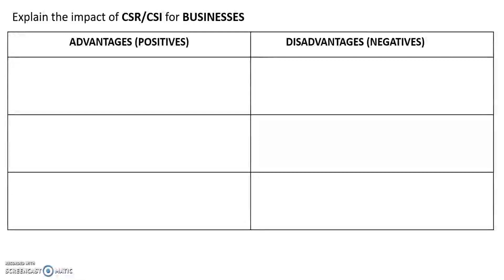We are going to look at the impact of CSR and CSI on the business or businesses. There is another question about the impact of CSR and CSI on the community, so just be aware about that. The advantages and disadvantages — if you see the word 'impact', you must answer advantages and disadvantages, or positives and negatives. You can put it in a table; it's just easier for the markers, but you don't have to. It can be in a paragraph.